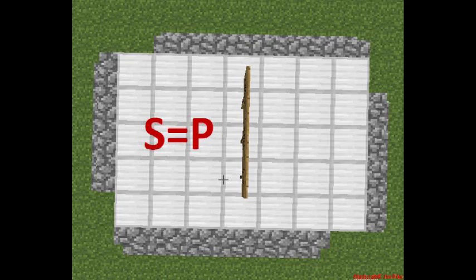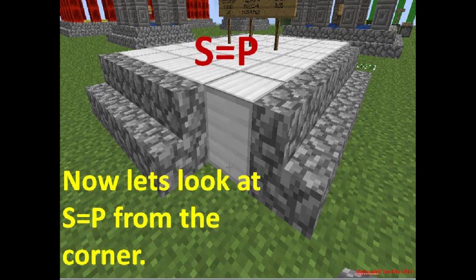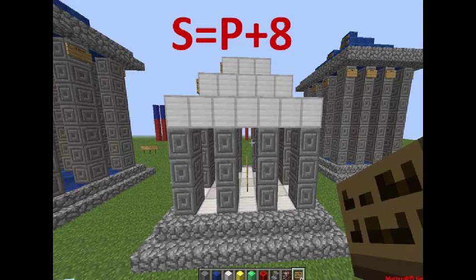Now let's take a look from the corners. As you can see, two more stairs are needed to complete each corner. So two times the four corners is eight. Whenever you need to make an outer perimeter in Minecraft, all you need is the formula perimeter plus eight. It's really cool.